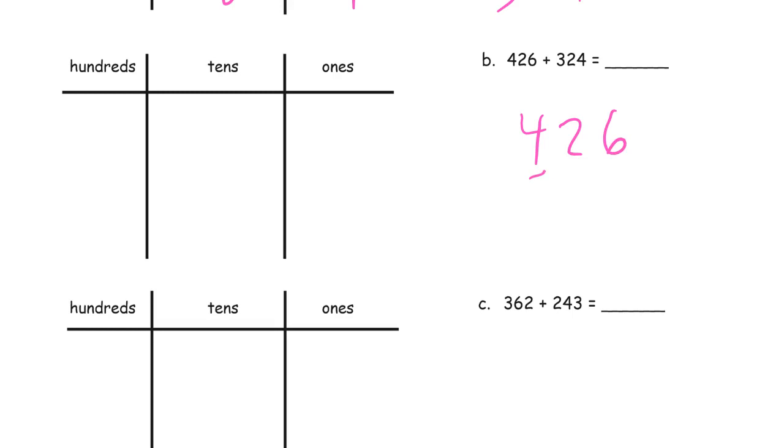426 plus 324. Starting with the ones digits, 6 plus 4 is 10. 2 plus 2 is 4, one more is 5 for our tens digits. And then 4 plus 3 is 7. 750.